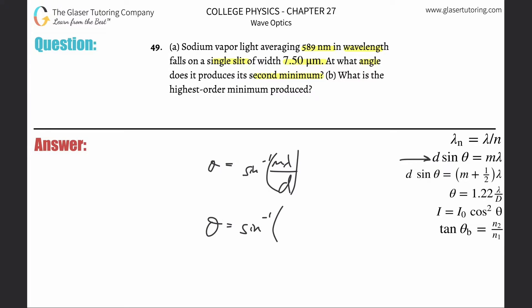This is now inverse sine of m - and it says the second minimum, so m is 2. The wavelength is 589 times 10 to the minus 9th because we need that in meters. Then the distance of the slit opening is 7.5 times 10 to the minus 6th, because that also has to be in terms of meters.